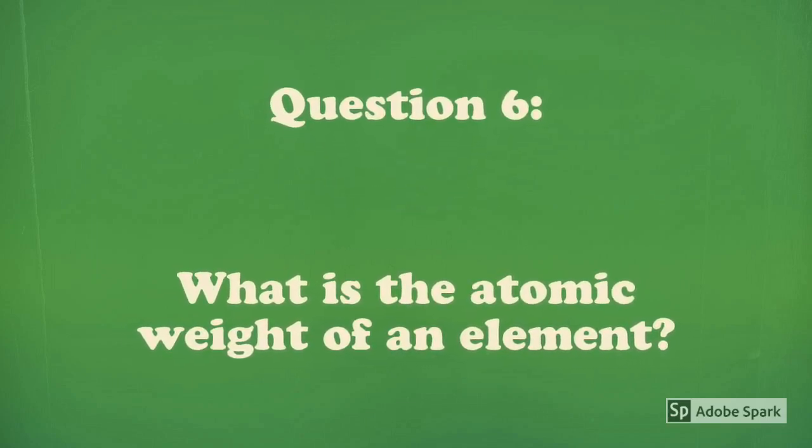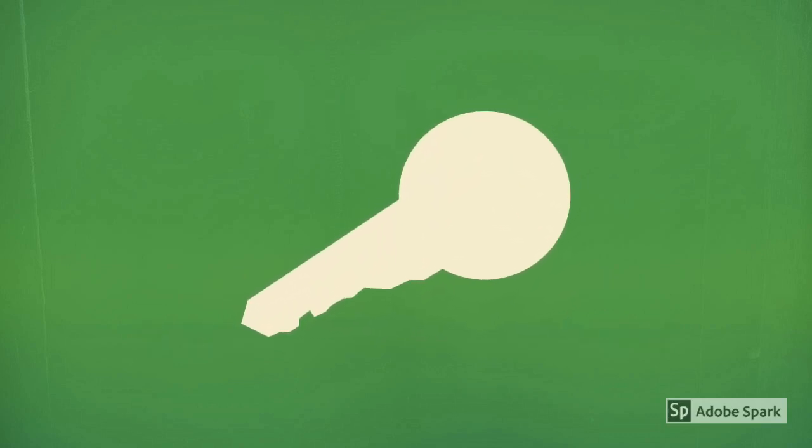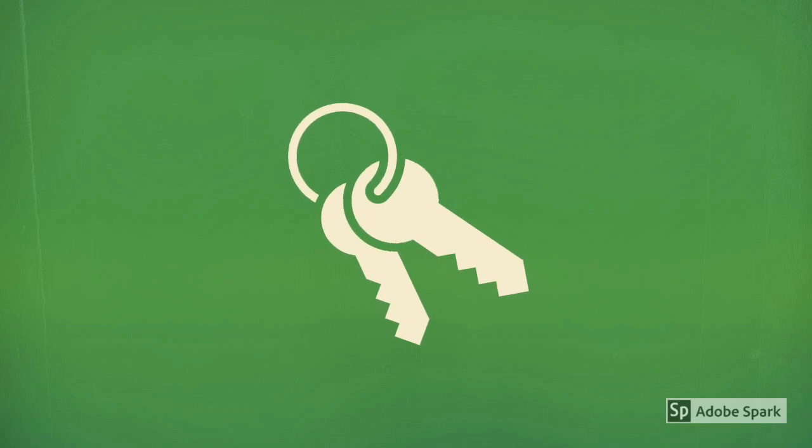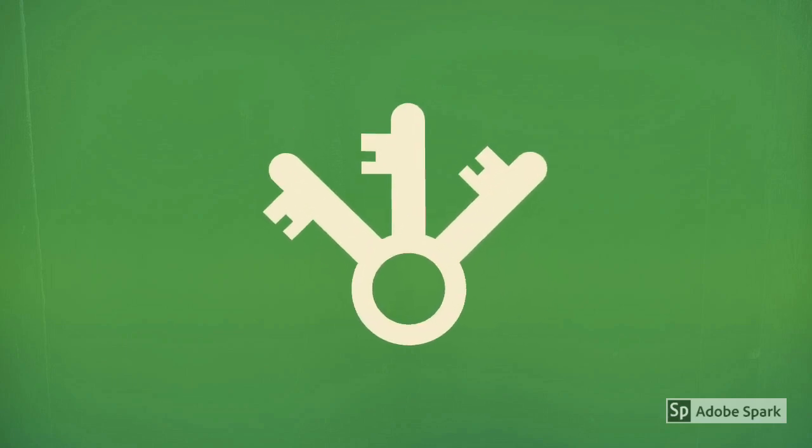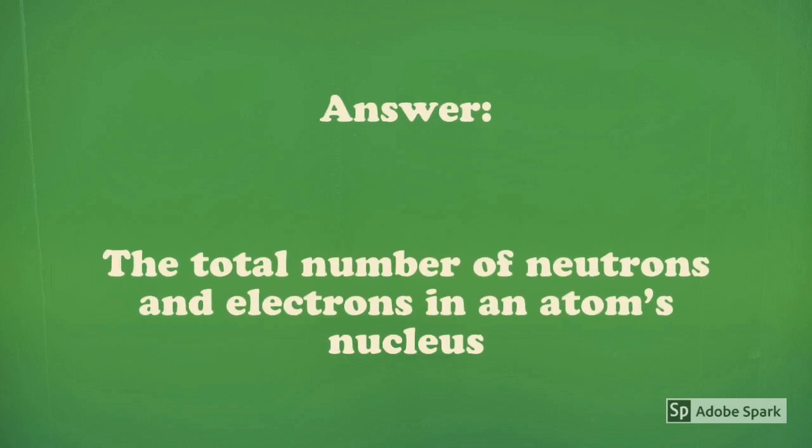Question 6: What is the atomic weight of an element? Answer: The atomic weight or atomic mass of an element is the total number of the neutrons and electrons in an atom's nucleus.